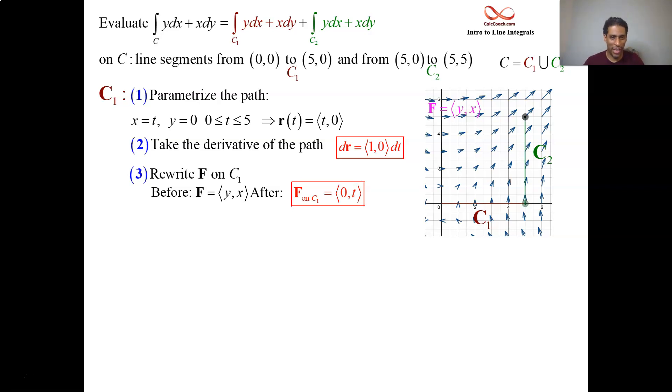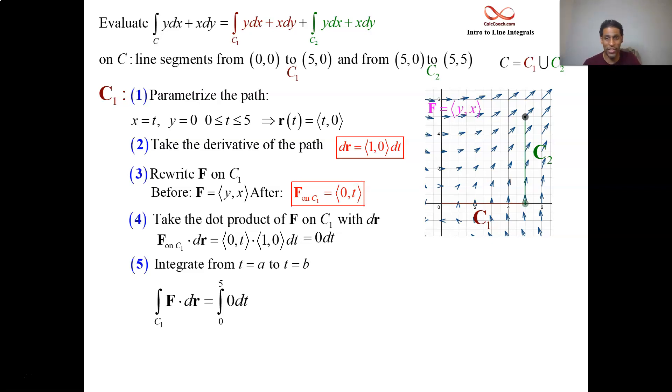In steps 2 and 3, we've calculated these two vectors. In step 4, we take their dot product. But look at this dot product: 1 times 0, 0 times t. It's going to 0 out. So when it's time to integrate, instead of 5, we're integrating 0. All day long, that's a 0. So the line integral over c1 is equal to 0.